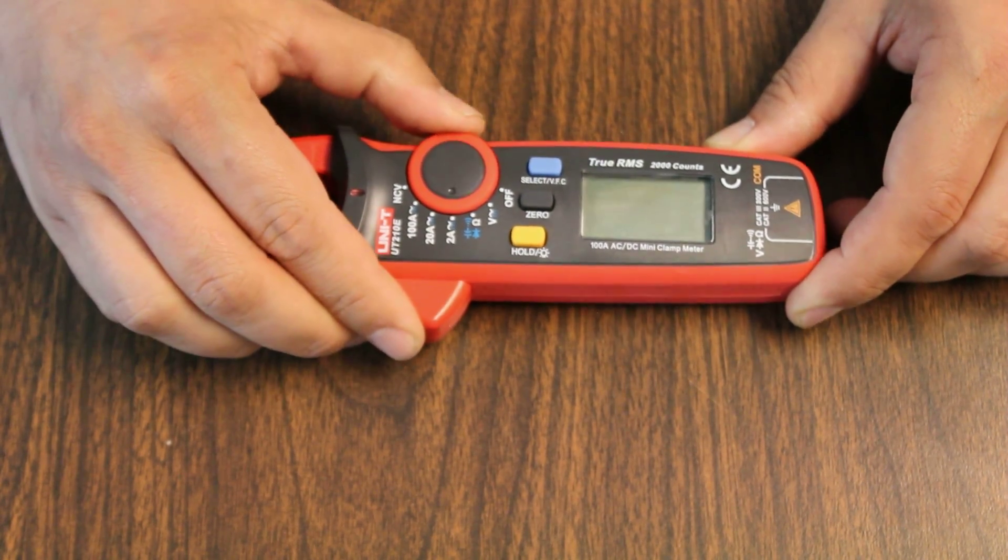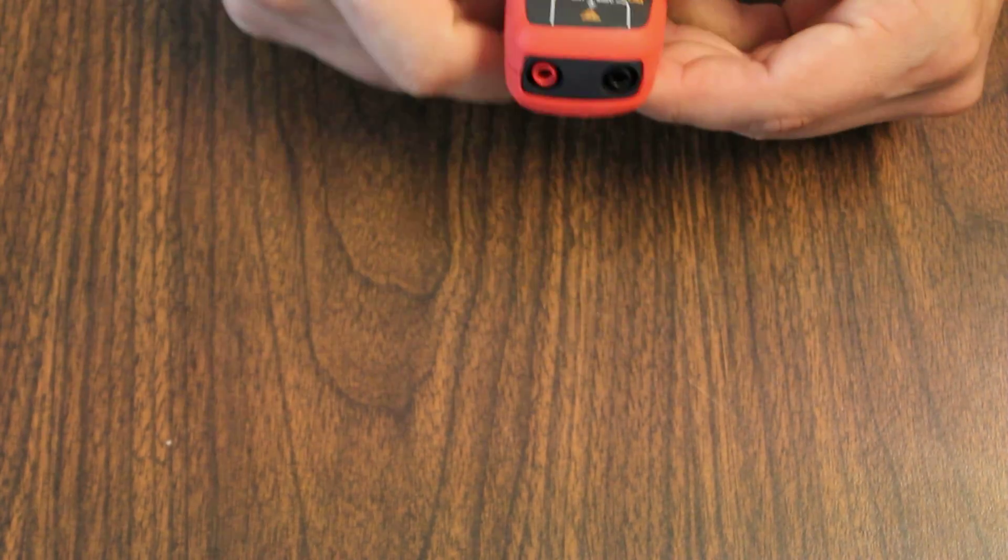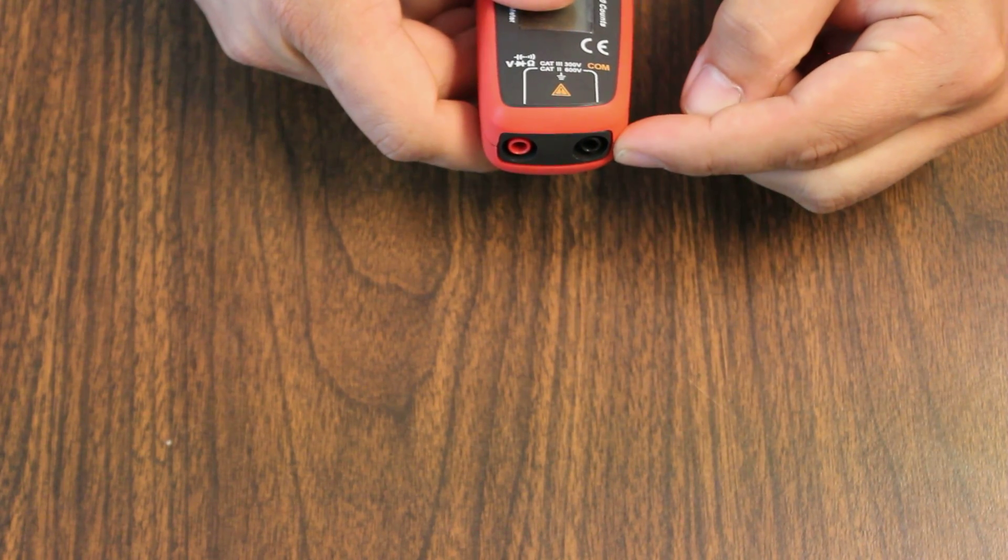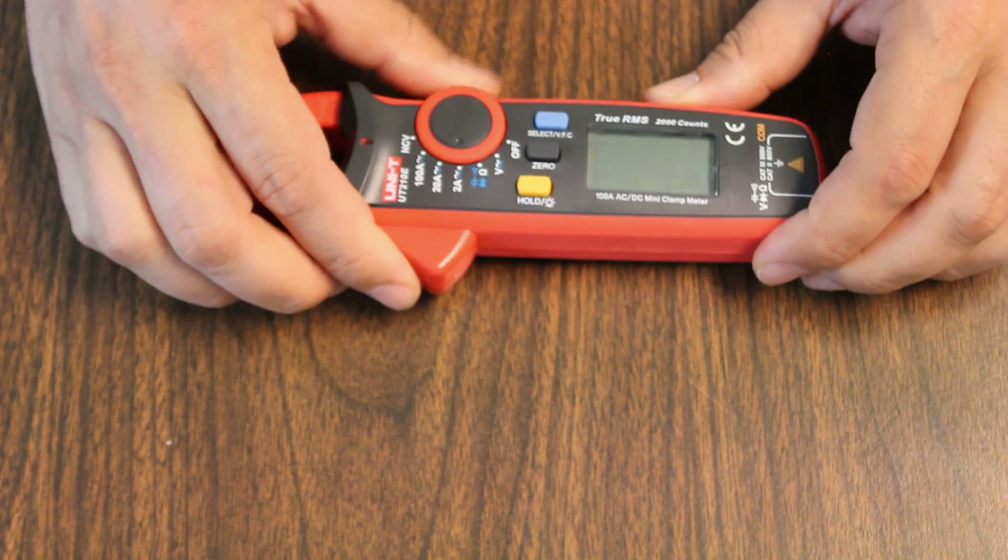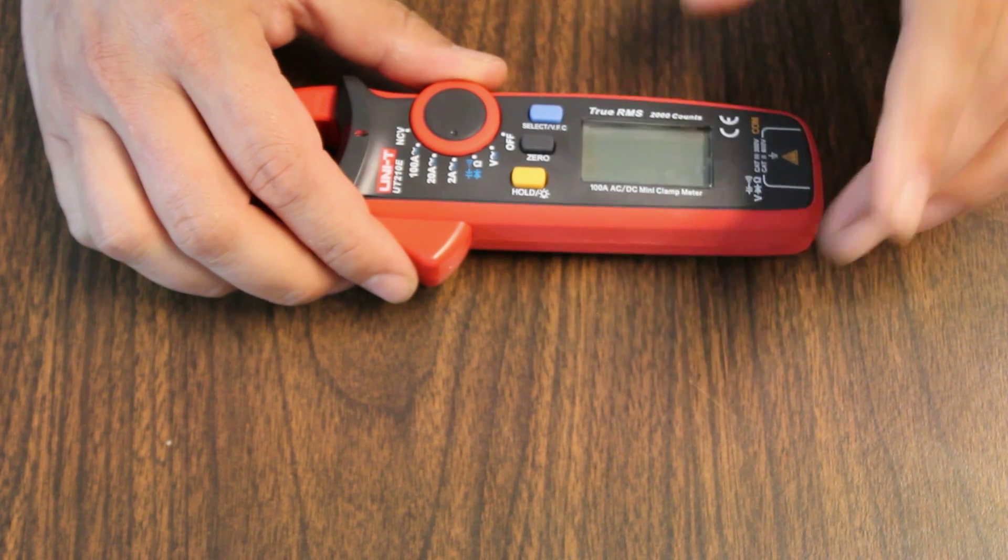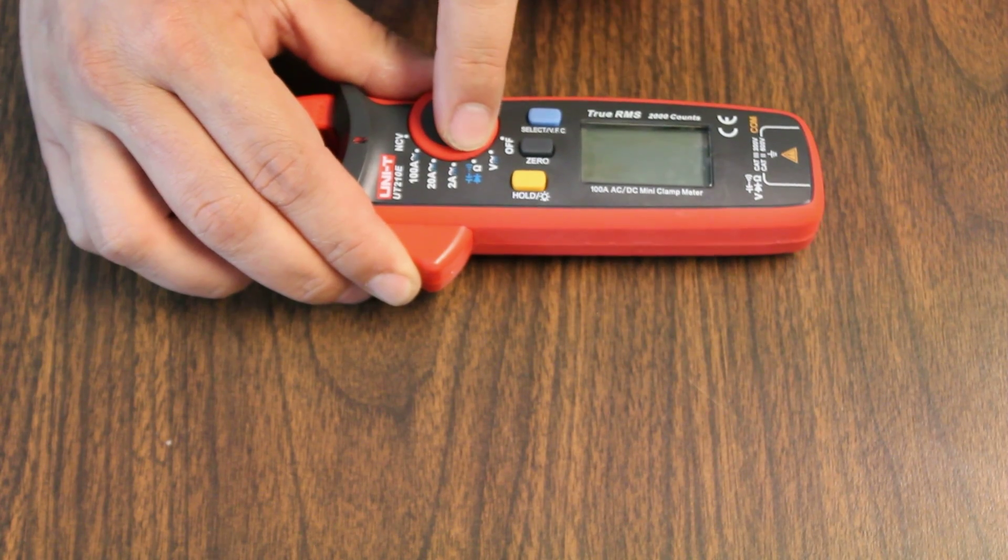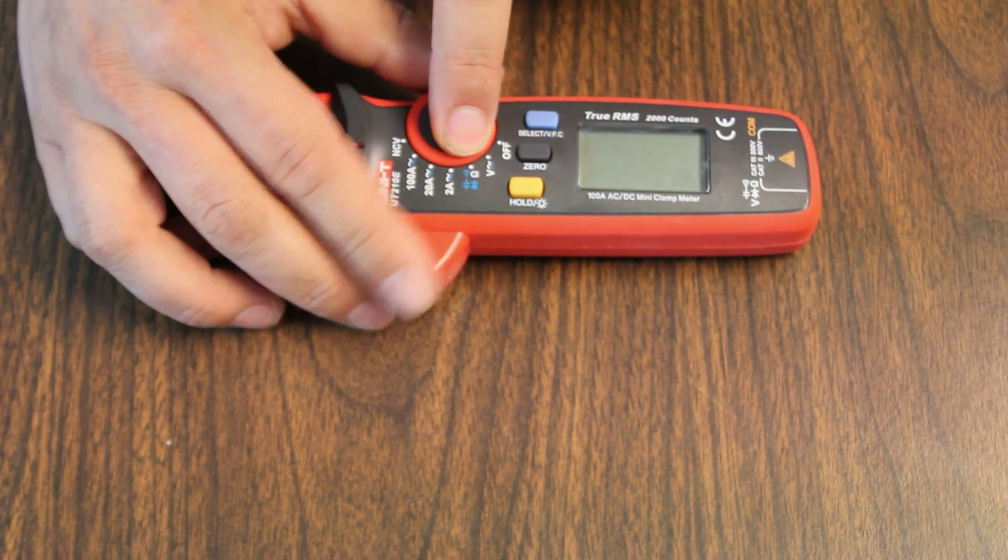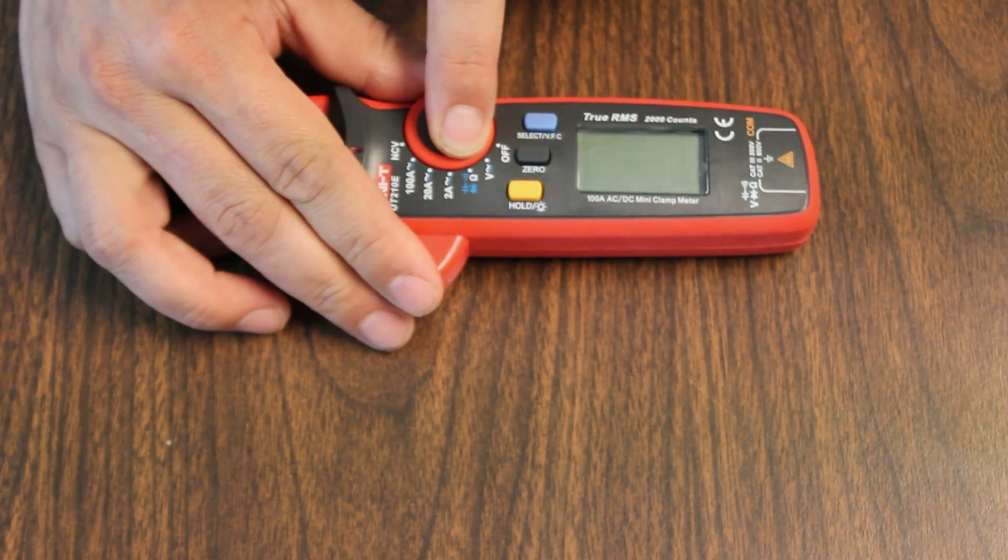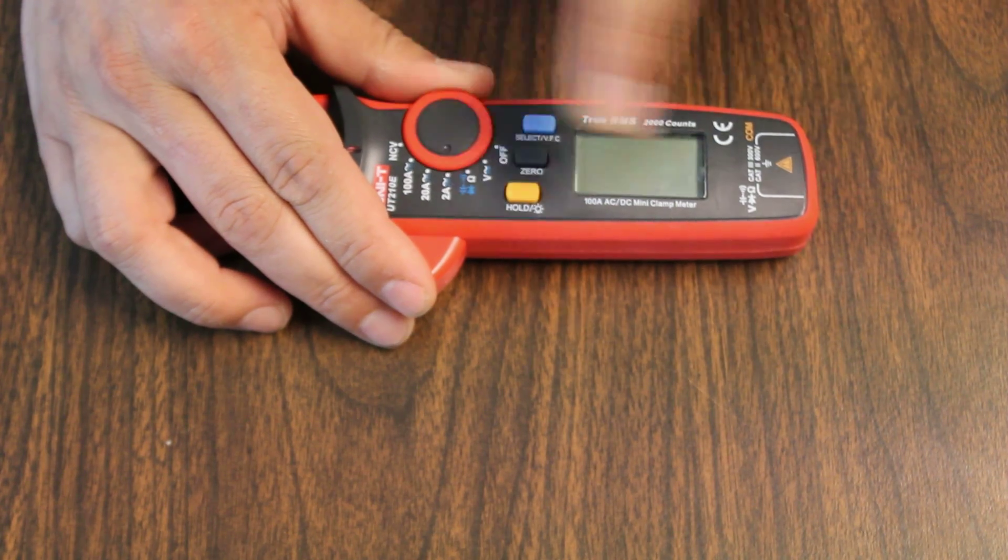We've got this here for setting what we're going to measure there at the bottom. That's where your actual probes will plug in if you're going to be doing any normal voltage measuring or resistance. And this one also has a capacitance meter as well. So it can measure the capacitance. I don't know what the sensitivity of it is or how precise it is, but it is a nice thing to have.